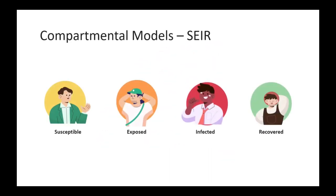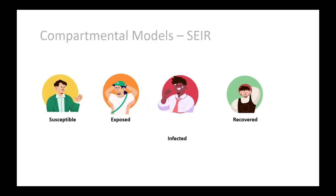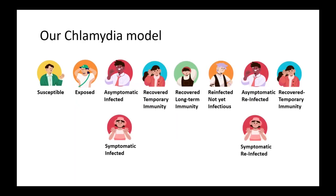The way we model these diseases in epidemiology is through a class of models called compartmental models. This describes an individual who would be placed in a certain compartment that describes their state. A classic model is the SEIR model, that divides the population into susceptible, exposed, infected, and recovered. We can now describe how an individual would move through these states as they are in the course of that infection. Our chlamydia model expands this simple model into a bunch of different states that describe the particular disease very well.